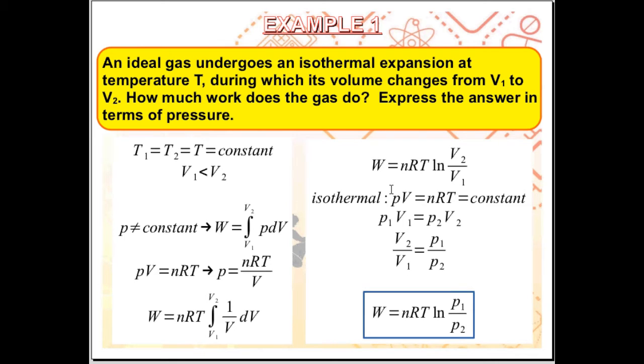Now, this is the work done by the gas as it expands from initial volume V1 to final volume V2. The problem asks us to express our answer in terms of pressure. If we go back to our ideal gas law, PV is equal to nRT.